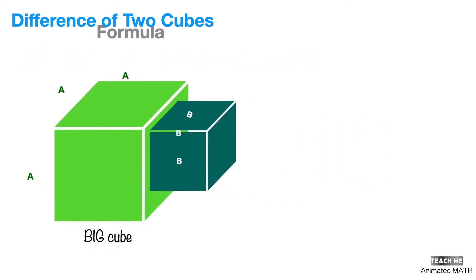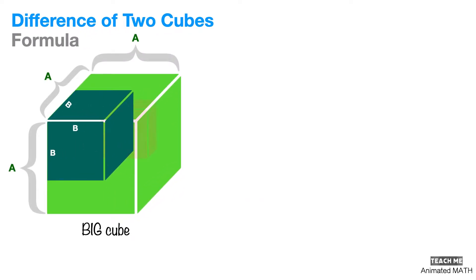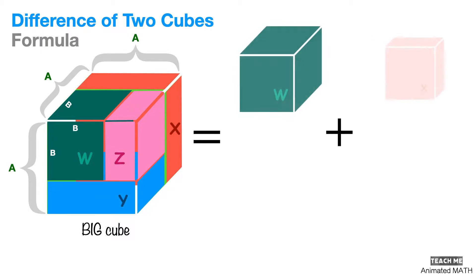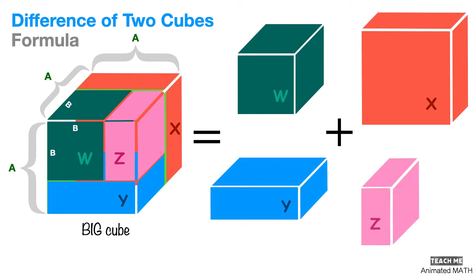We can split the big cube into four smaller boxes and label them as W, X, Y, and Z. Let's now express the sides of each box in terms of A and B.